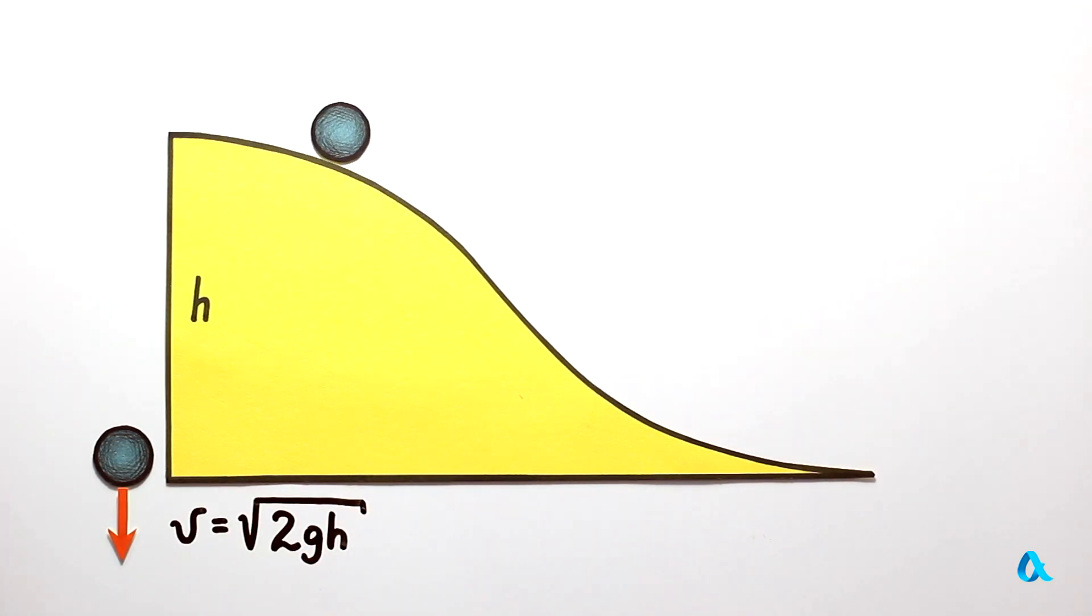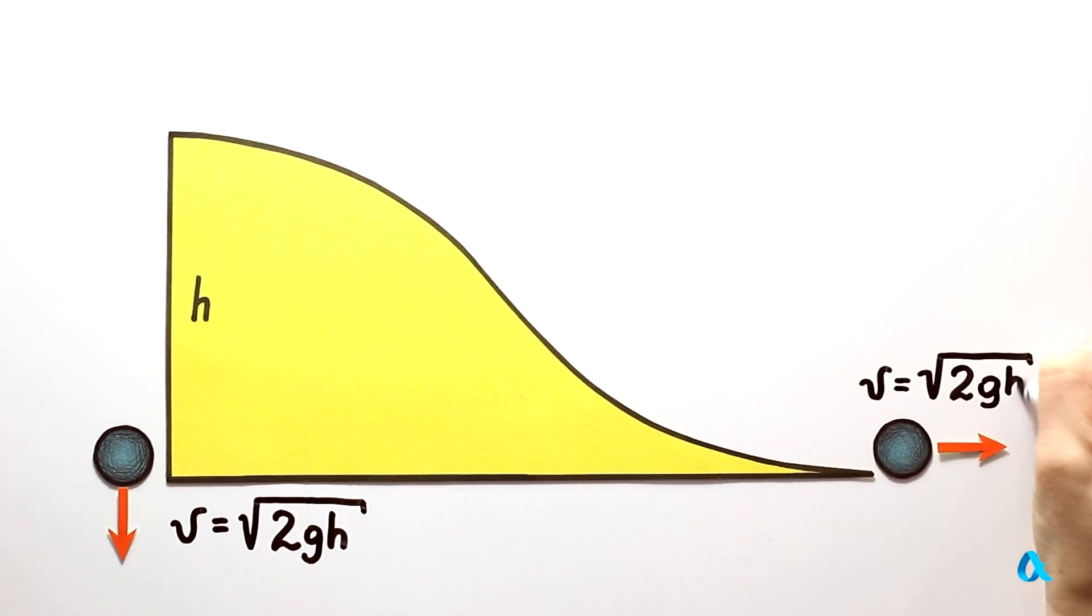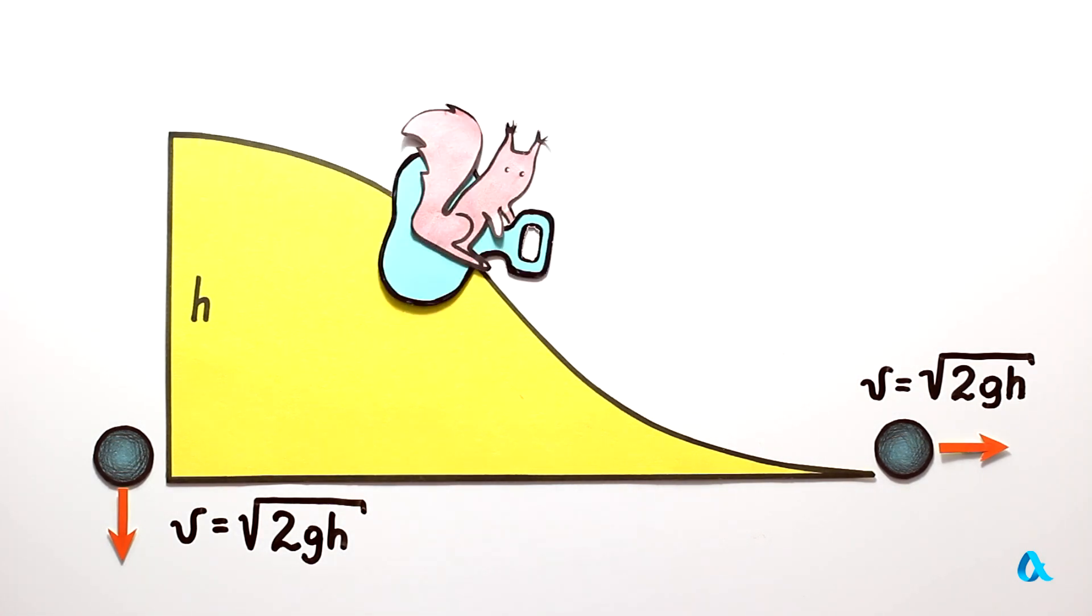This means that for all other slides of height h, the speed will be the same. It will only be true, however, for a sledge sliding down without friction and not for a ball, because its energy transforms not only into progressive but also into rotary motion. So it rolls slower than a sledge. We talk about it in detail in our video called Moment of Inertia.